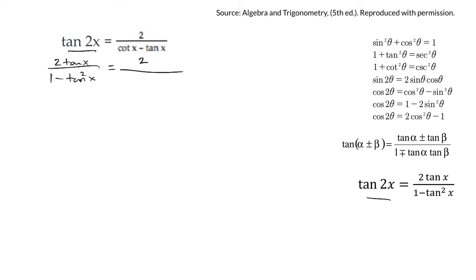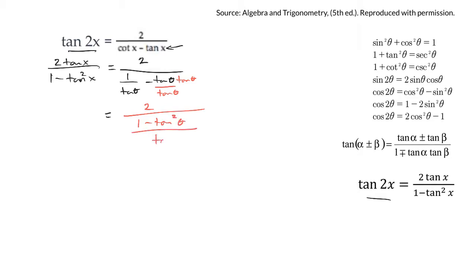So what I'm going to do is try and get a common denominator here. Cotangent is the same as 1 over tan theta minus tan theta. The common denominator will be tan theta. So I need to put a tan theta here. And if I multiply the bottom, I have to multiply the top. So let's write what we've got so far — that would be 2 over 1 minus tan squared theta over the common denominator, tan theta.